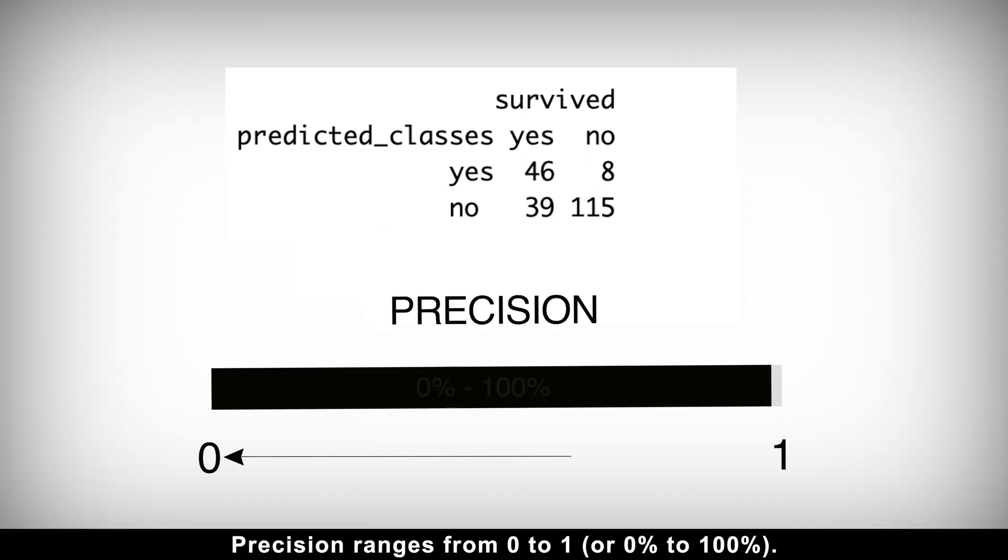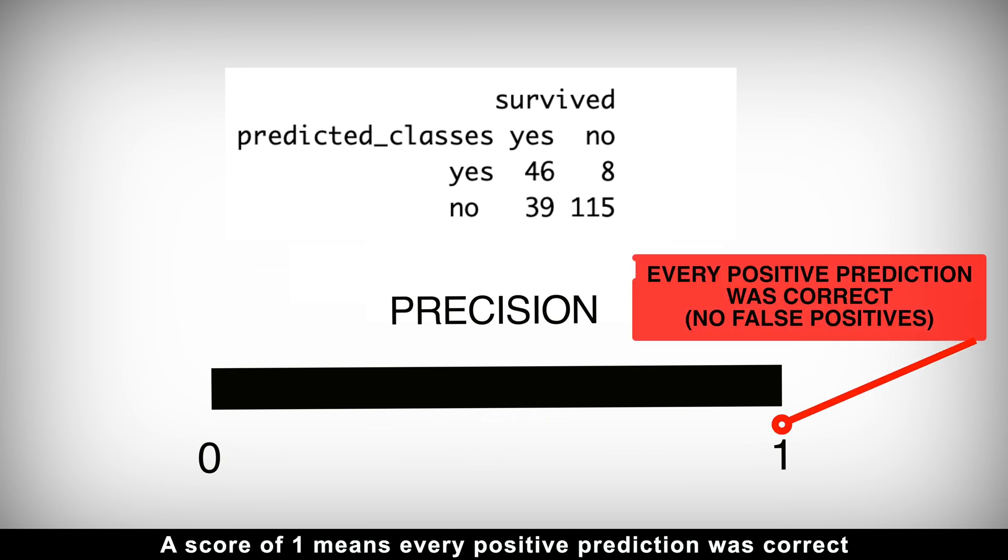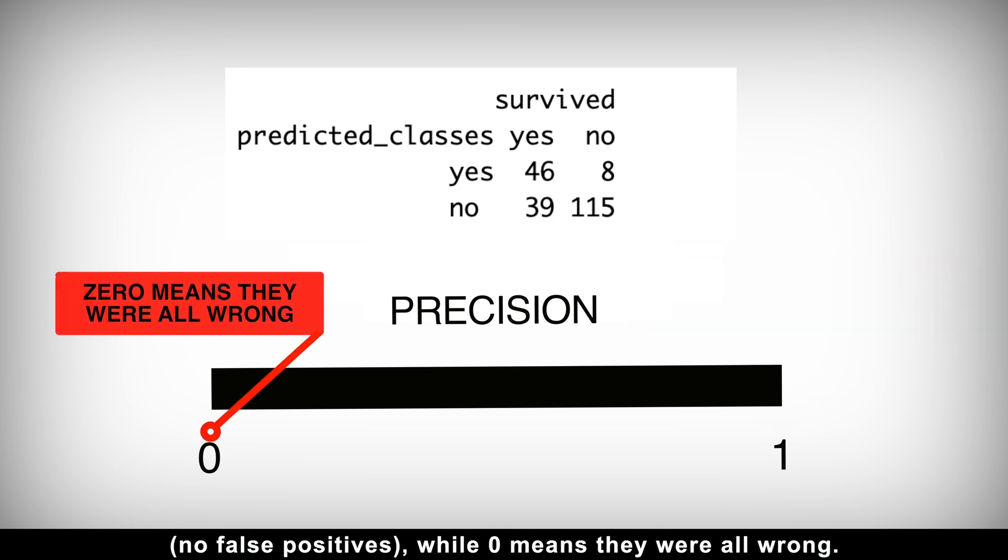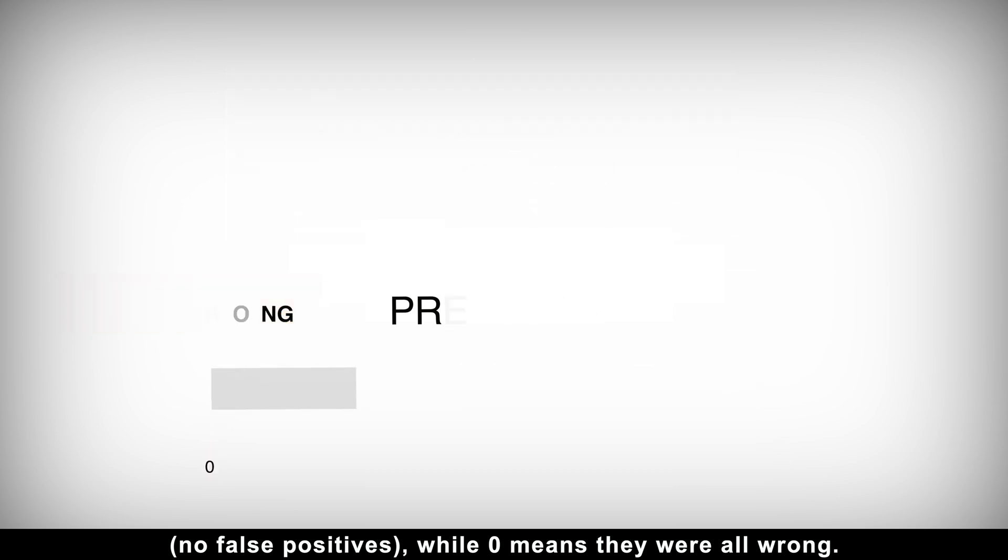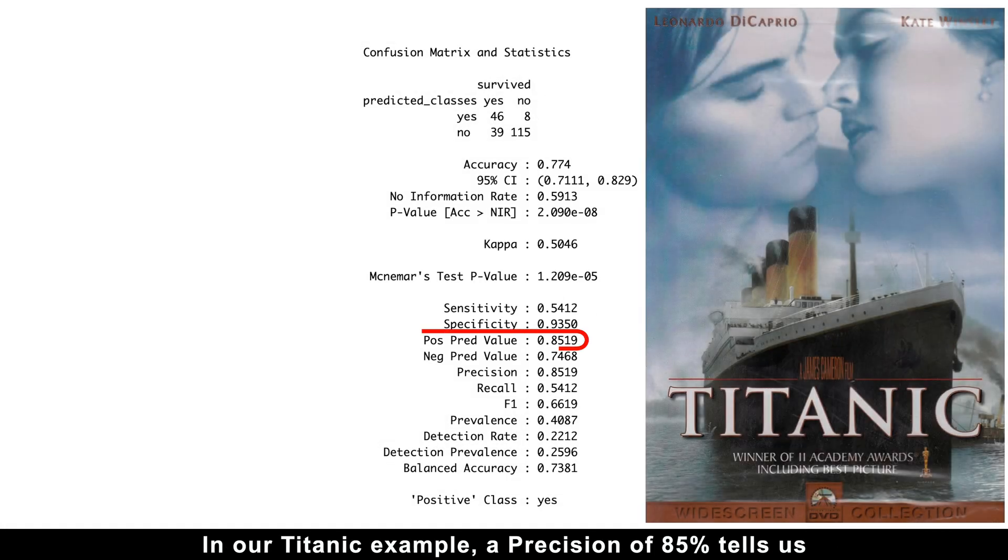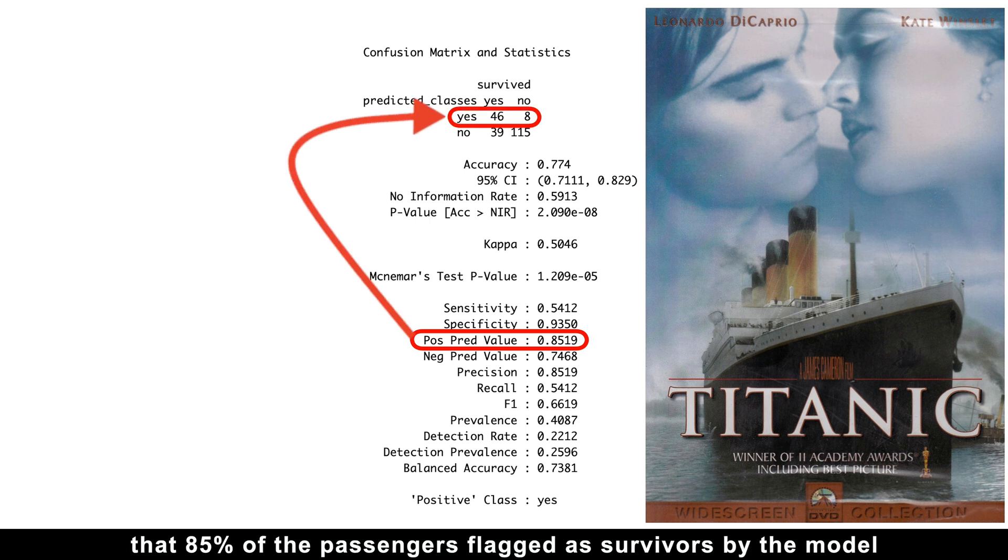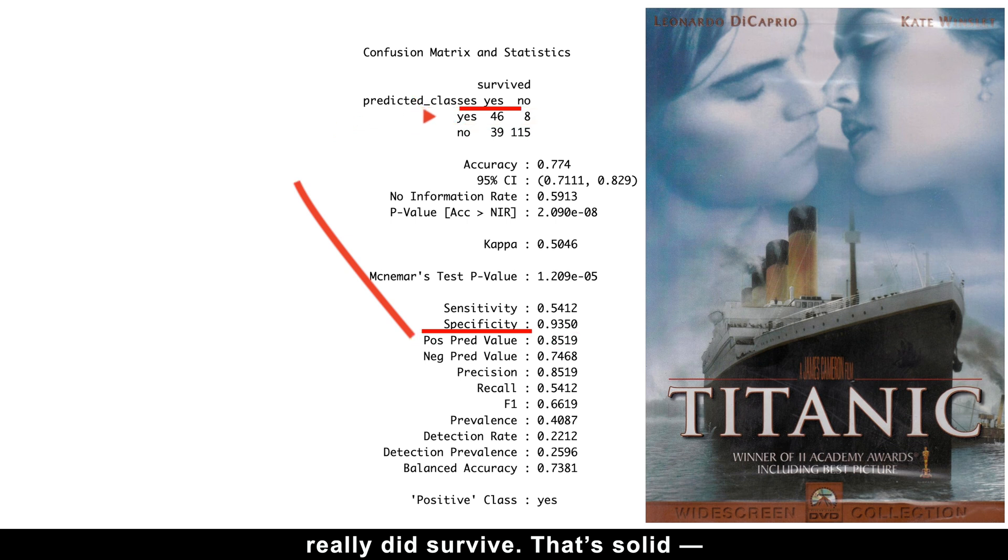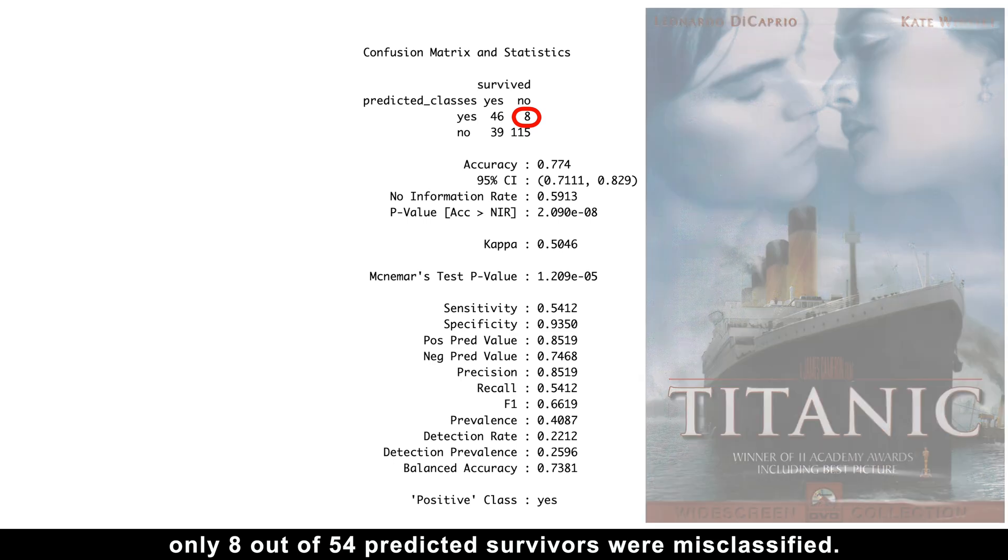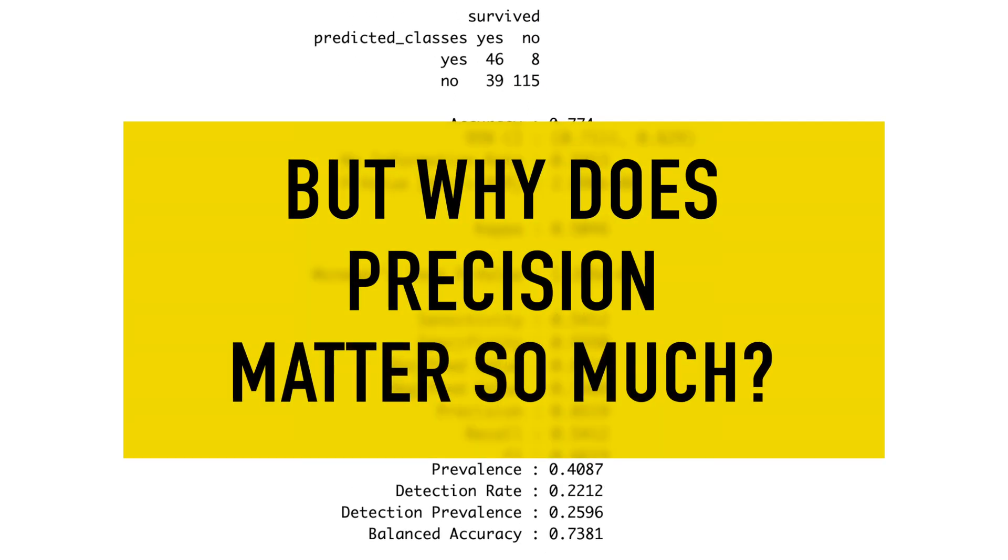Precision ranges from 0 to 1, or 0% to 100%. A score of 1 means every positive prediction was correct, no false positives, while 0 means they were all wrong. In our Titanic example, a precision of 85% tells us that 85% of the passengers flagged as survivors by the model really did survive. That's solid. Only 8 out of 54 predicted survivors were misclassified.